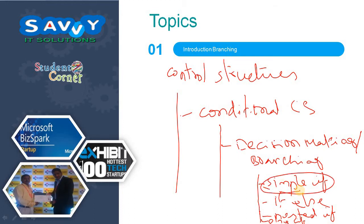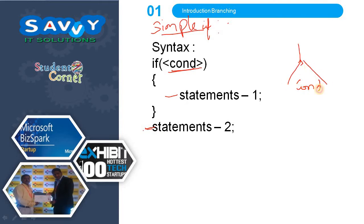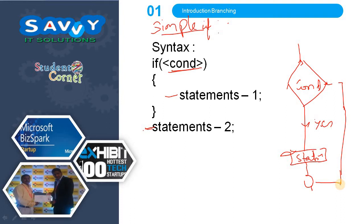Now I am moving to the next level. The syntax of simple if: if the condition is true, then statements 1 and statements 2 are executed. If this condition is false, then only statement 2 will be executed. The flowchart indicates: if this condition is true then statements 1 and statements 2 are executed; if the condition is false then directly statement 2 will be executed.